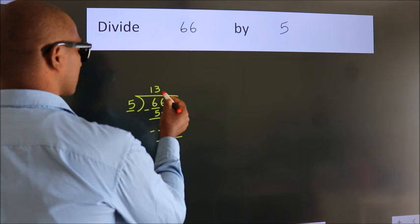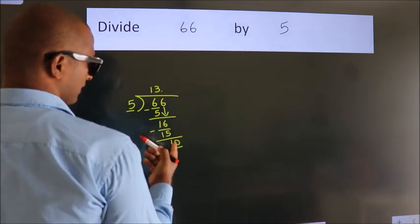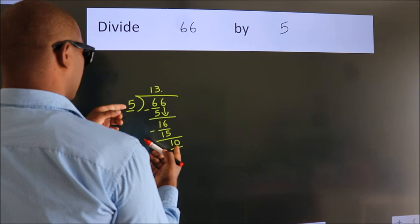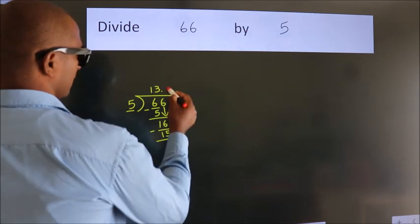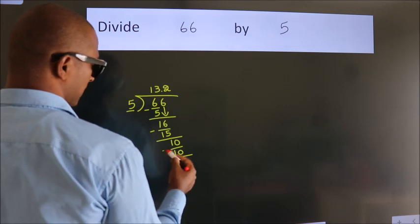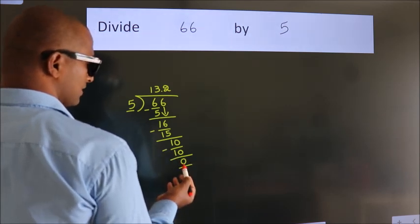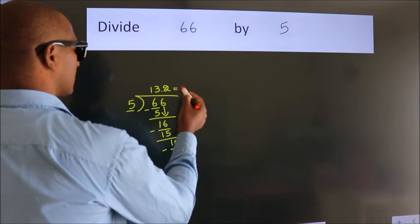So what we do is put a dot and take 0, giving us 10. When do we get 10 in the 5 table? 5 twos 10. Now we subtract and get 0. We got remainder 0. So this is our quotient.